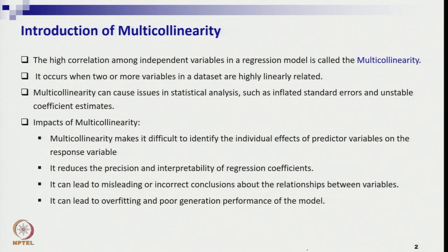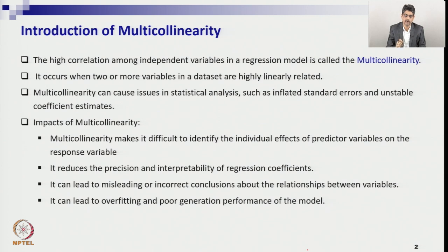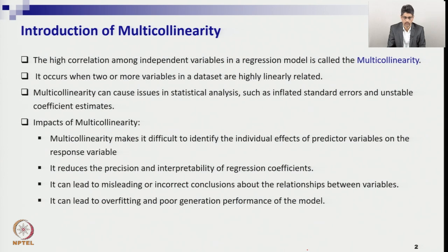In multiple regression, if some variables — for example, age and experience can define performance — but if we also include variables like height or academic activity level, sometimes some variables become irrelevant and are directly removed. But sometimes some variables are relevant but linearly dependent on each other. In that case, which variable to remove and how to handle multicollinearity is what we need to study.